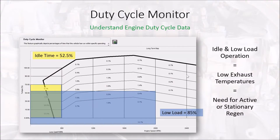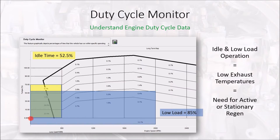This is the same vehicle — the garbage truck from City of Victoria. This chart puts a percentage in each of these boxes to determine the amount of time spent in different operating conditions. This line is 800 RPM; everything to the left would be time spent at 800 RPM or less, which is idle time. Adding up all the percentages in this box, we've determined that 52.5 percent of the life of this vehicle has been spent at idle.